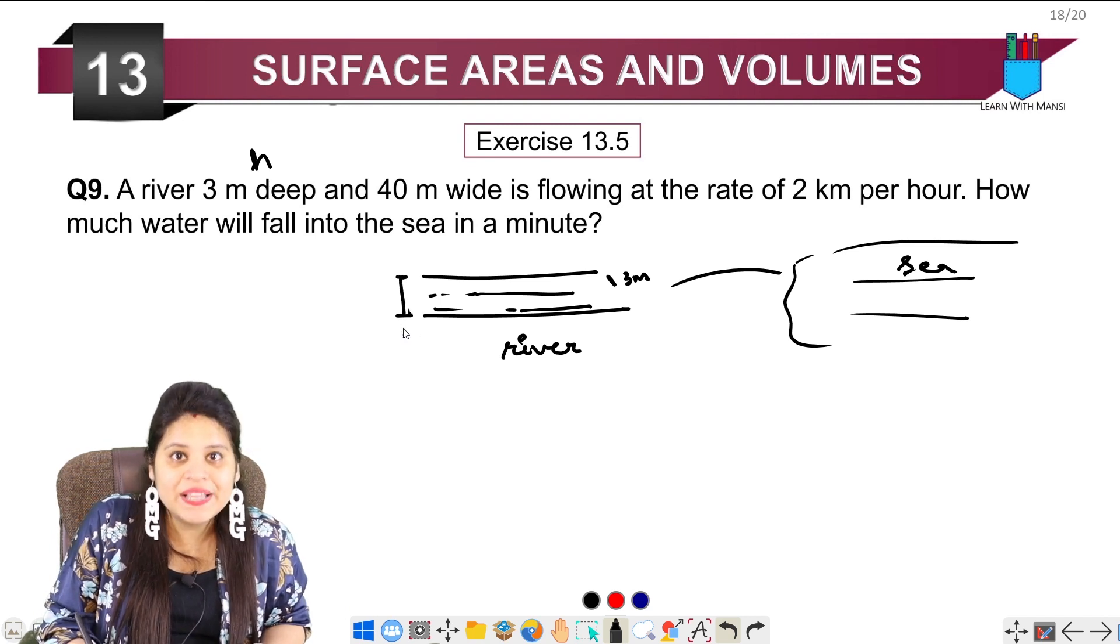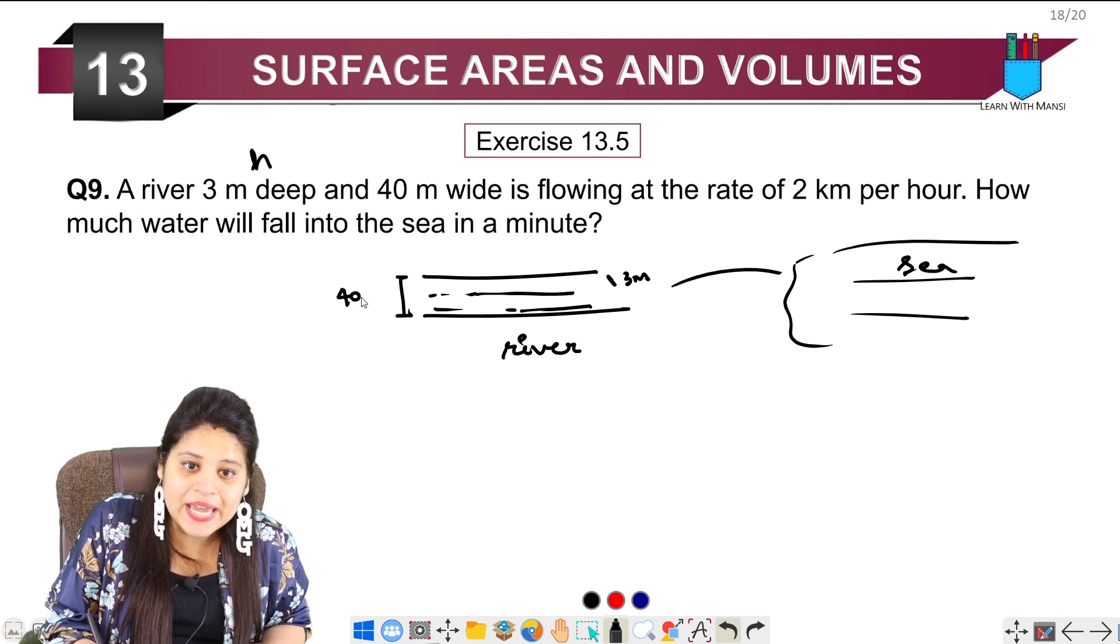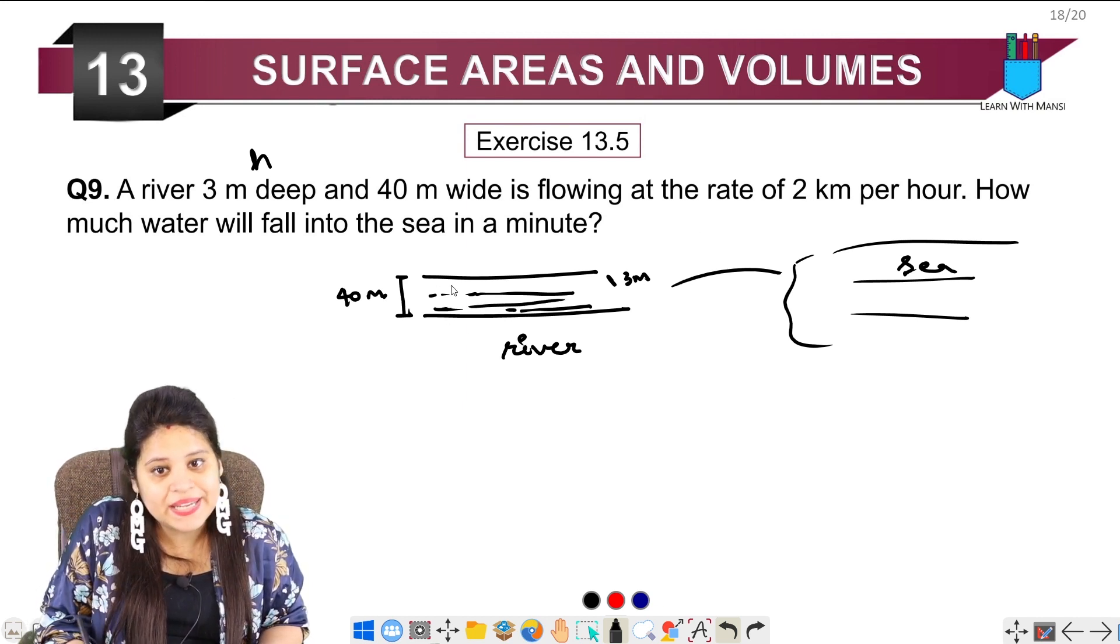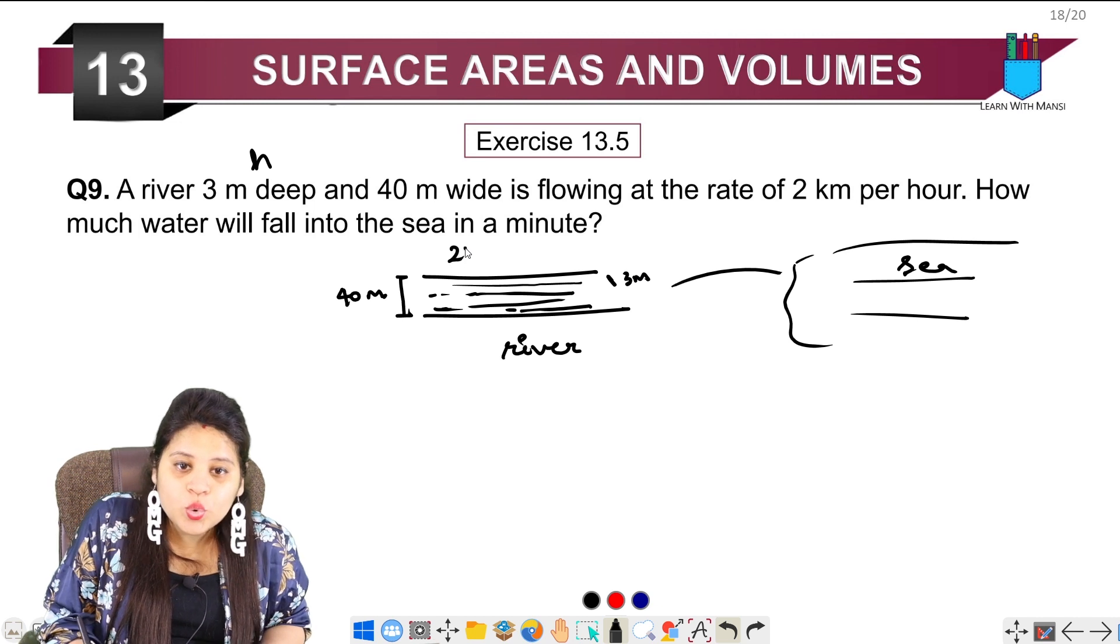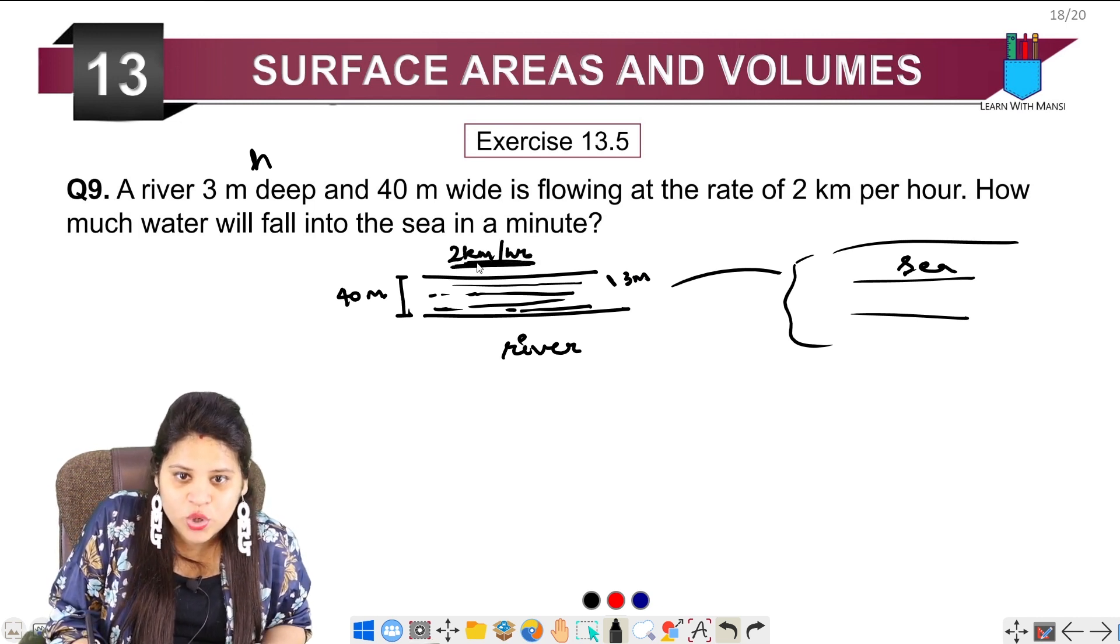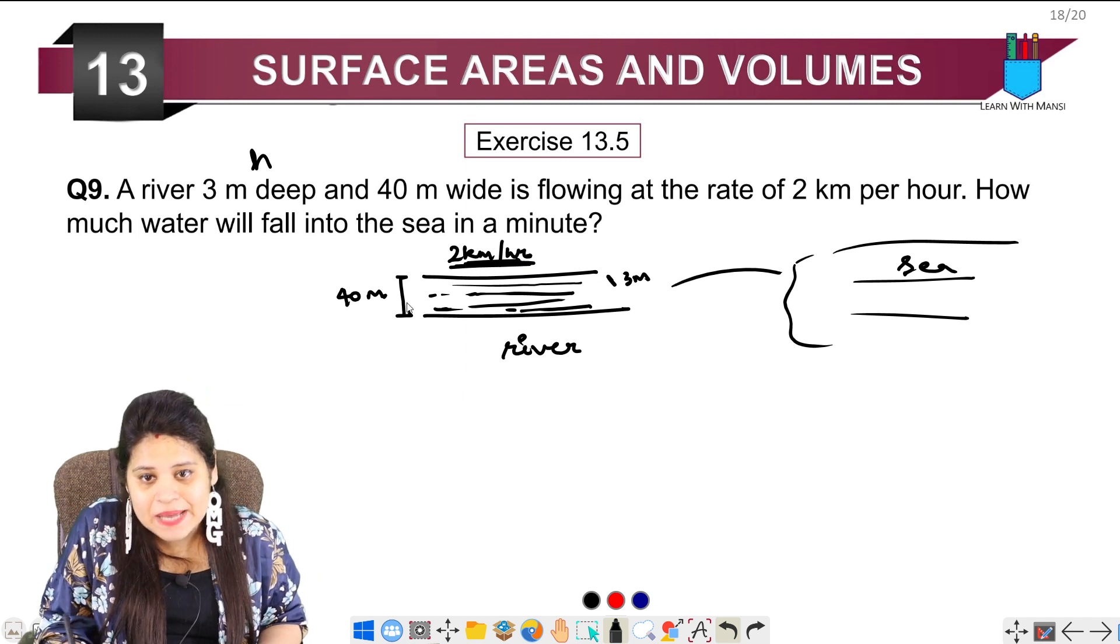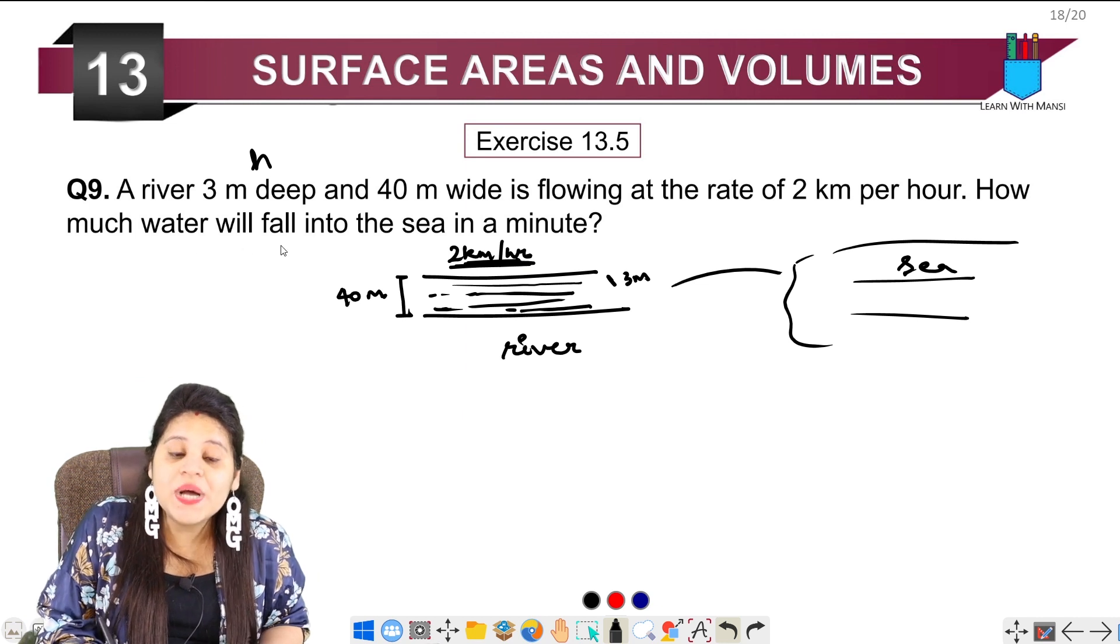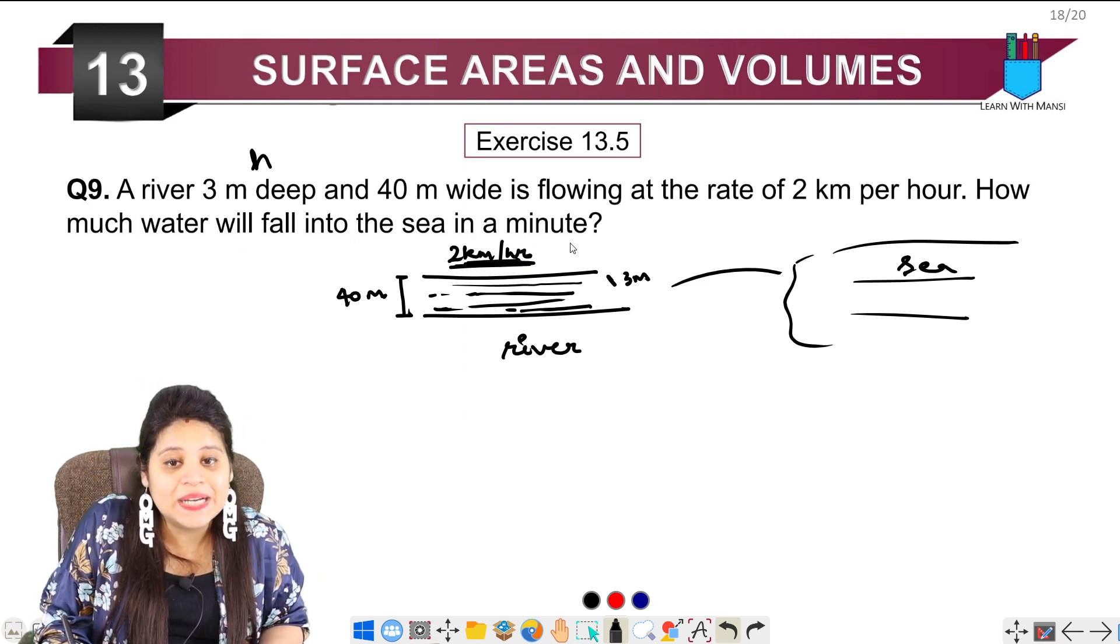Now, the width of the river is 40 meters and the flowing rate of the water is 2 km per hour. The length of the river is based on this 2 km per hour rate. Because we have been asked how much water will fall into sea in a minute.